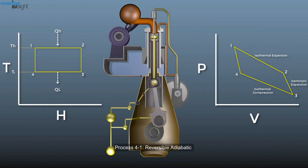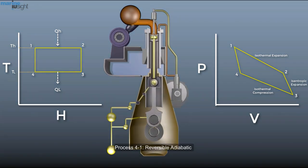Process 4-1: Reversible adiabatic, also known as isentropic compression.